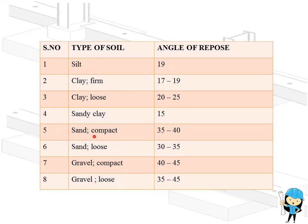In sand, for compacted soil, it is 35 to 40. And sand loose soil, it is 30 to 35. Next is gravel.